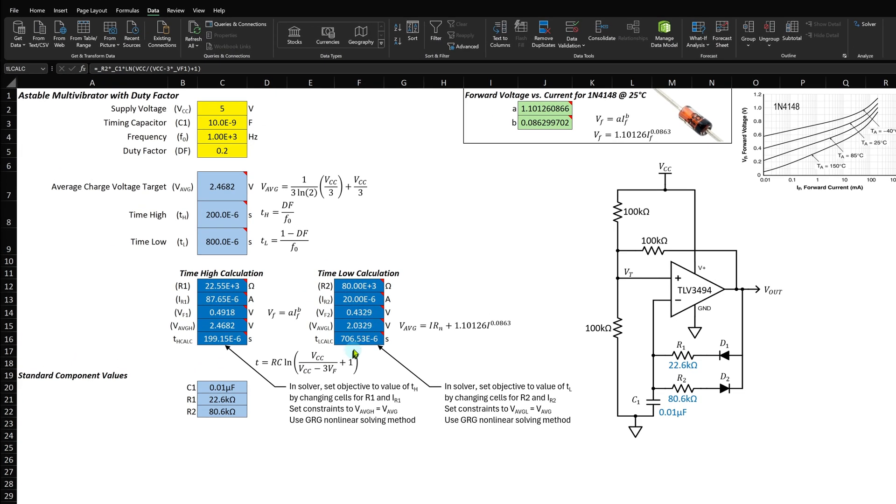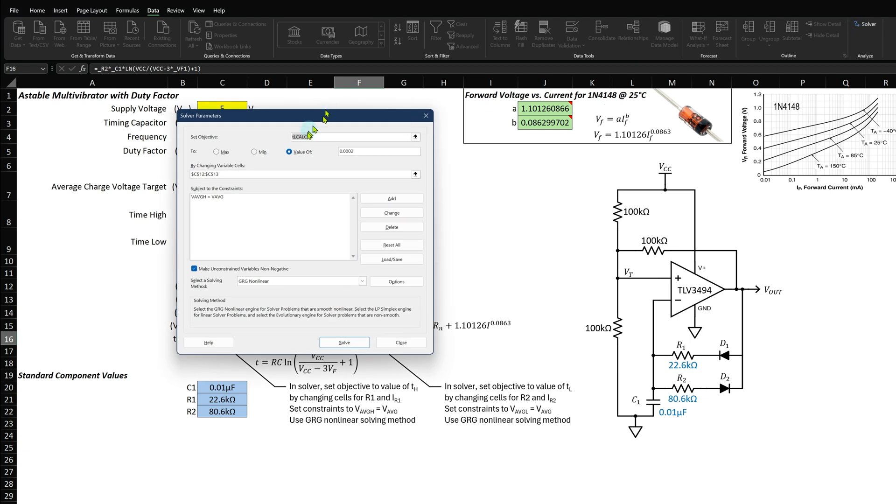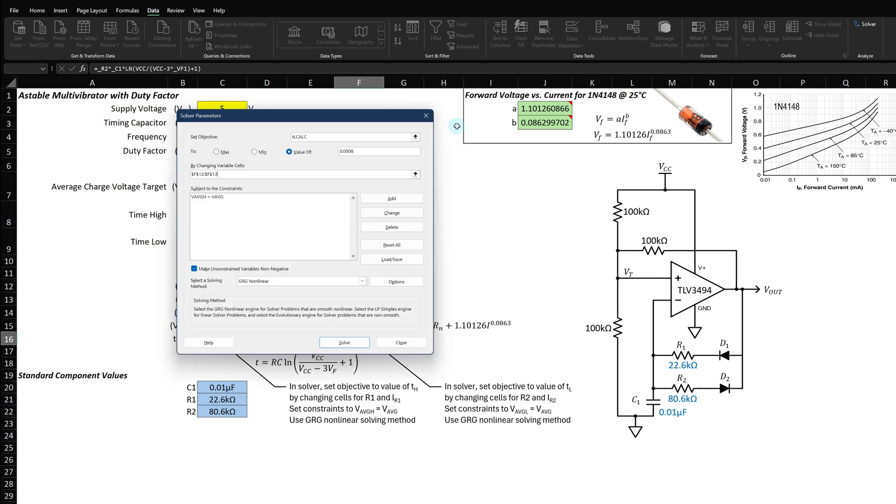Now let's run the solver for the Time Low. Select the cell that's the object, which is the Time Low Calc. Click the solver and you'll see that it already has the set objective as the TL Calc cell. We want the solver to give us a high time of 0.0008 seconds. Then we need to select the cells to change to get the desired result. In this case, the cells for R2 and IR2.